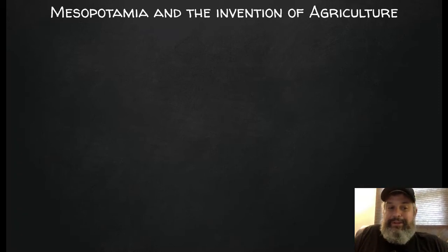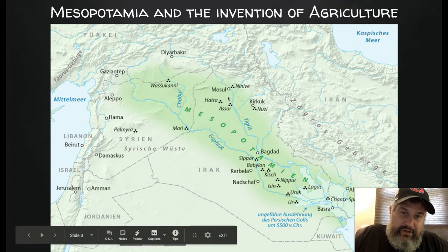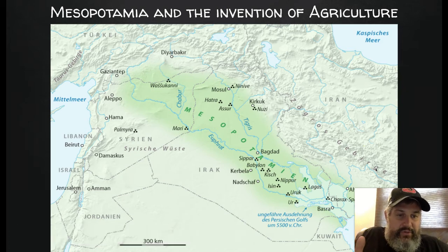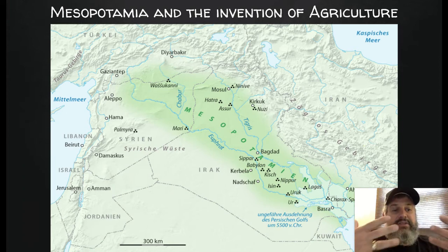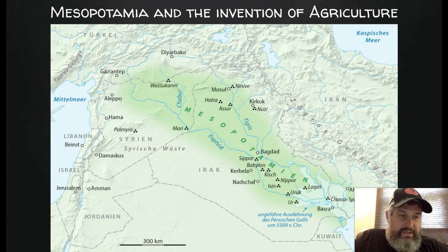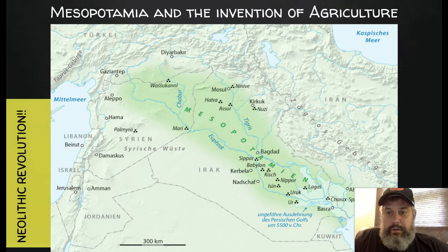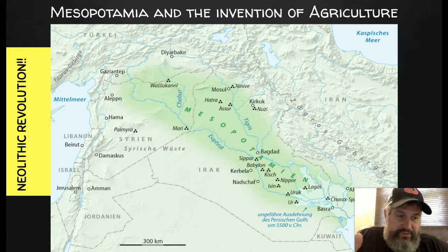Mesopotamia and the invention of agriculture. You've got the Tigris River on one side and the Euphrates River on the other, and those two rivers are really what makes this area so rich and lush. The rivers would flood, and after they receded they'd leave behind rich silt, making the soil really nice to grow things in. This is supposedly where the Neolithic Revolution started, because this is one of the places they find some of the first artifacts.